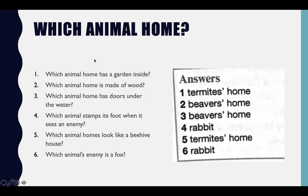After that, you will find six questions about the animal home. For example: which animal home has a garden inside? Of course, it's a termite — I've put the answer there for you. Read the text again, answer the questions, then compare with the answers.